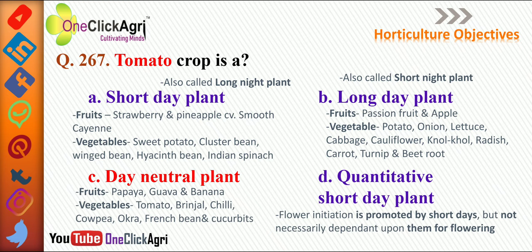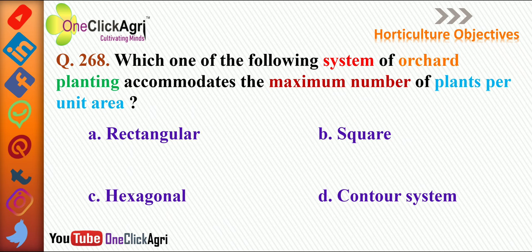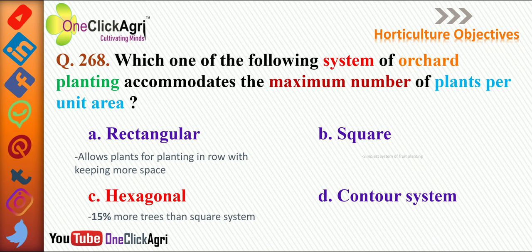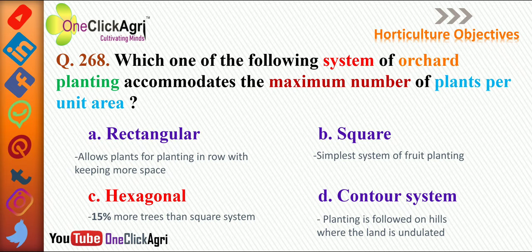A new term here is quantitative short day plant: flower initiation is promoted by short days, but the plant does not necessarily depend on them for flowering — that is called a quantitative short day plant. Next question: Which system of orchard planting accommodates the maximum number of plants per unit area? The right answer is the hexagonal system, which accommodates 15% more trees than the square system.